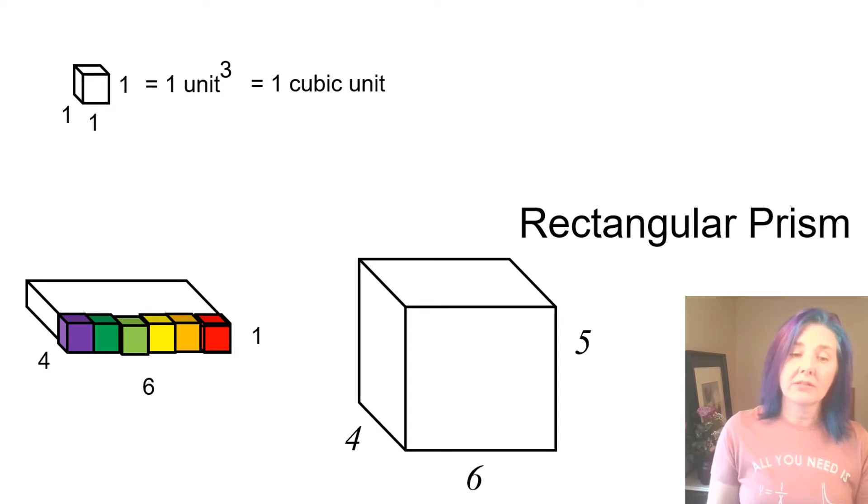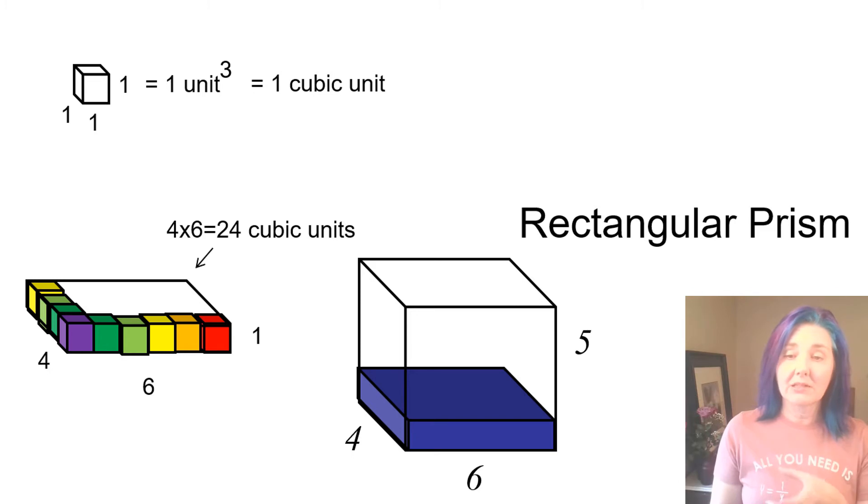And then how many will go down the side? We already have one on the side there. Since the side is four units long, we can fit three more for a total of four cubes going on the side. Now I could continue in this way, but since we have four going down the side and six going across, it forms a grid. So how many little cubes would be in one layer of this box? Four times six or 24 of these little cubes. Each slice of this four by six by five rectangular prism contains 24 of these little cubic units.